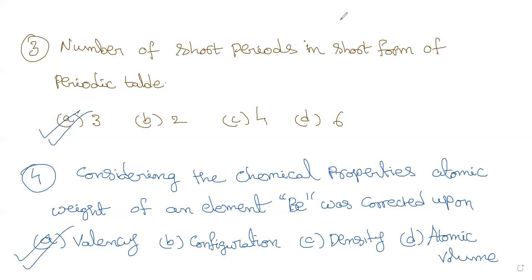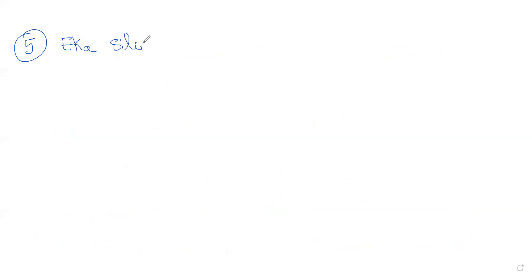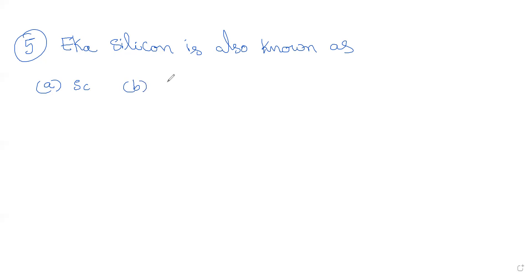Question 5: Eka-silicon is also known as — option A: scandium, option B: gallium, option C: germanium, option D: boron. The right answer is germanium — eka-silicon is germanium.